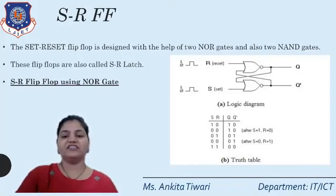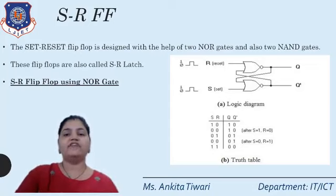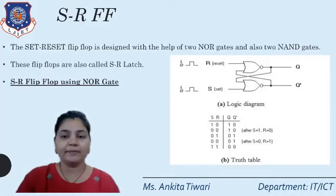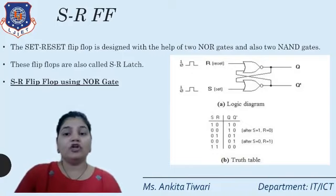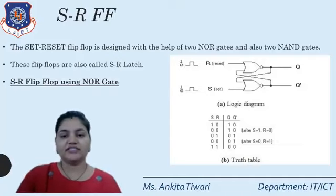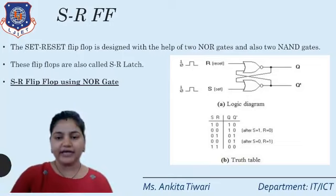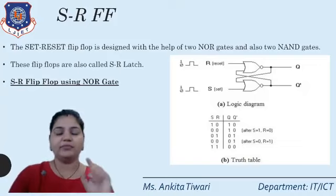The condition 0 1 means R=1, so output Q=0 automatically. Finally, condition 1 1: if both S and R are 1, both Q and Q-bar should be 0, but that is not possible since they must complement each other. So this condition becomes indeterminate in SR flip-flop using NOR gates. The 1 1 condition is not applicable for SR flip-flop.